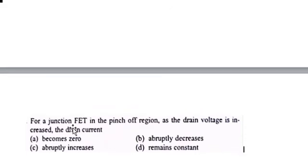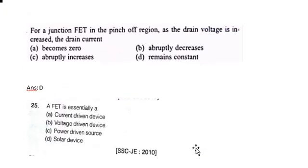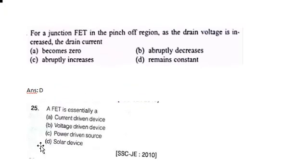For a Junction FET in the pinch-off region, as the drain voltage is increased, the drain current remains constant. Because it is the pinch-off region, drain current becomes constant there. The answer is D.